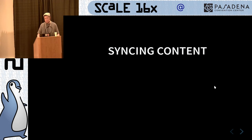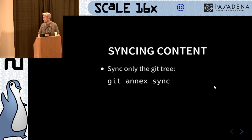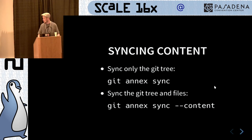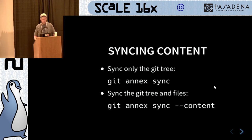Once you have multiple remotes, you'll want to sync the content. If you want to sync only the Git tree and not the files, git annex sync will find all of your available repos, whether local or remote, and sync just the Git part of the tree. If you add the --content flag, you will also sync all the content down. In my setup I have GPG encrypted remotes, so it'll prompt me for my GPG password, I enter it, and it syncs all the content there. Then I unmount it and rotate it offsite.